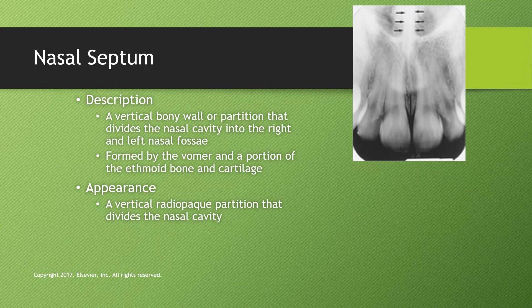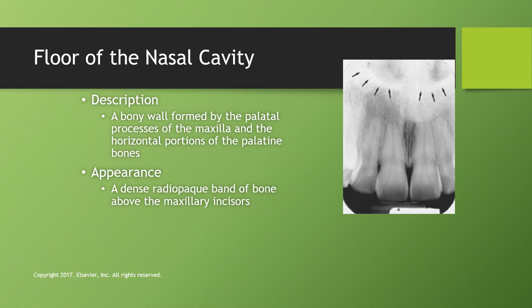The nasal septum is the bony vertical wall or partition that divides the nasal cavity into the right and left nasal fossa. It is formed by the vomer bone, a portion of the ethmoid bone, cartilage, and the nasal bones at the top. It appears as a vertical radiopaque partition dividing the nasal cavity. The floor of the nasal cavity is a bony wall formed by the palatal processes of the maxilla and horizontal portions of the palatine bones, appearing as a dense radiopaque band of cortical bone above the maxillary incisors.